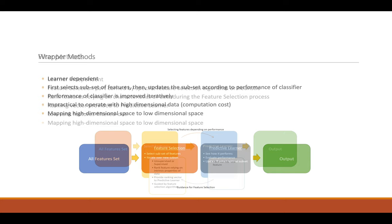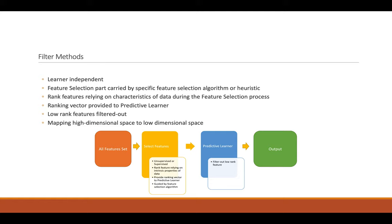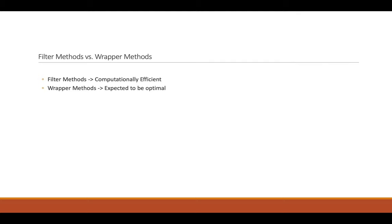Filter Methods are learner-independent. Feature selection are carried by a specific feature selection algorithm or heuristic. Ranked features rely on characteristics of the data during the feature selection process, but Filter Methods can only use for labeled data. Filter Methods are computationally efficient. On the other hand, Wrapper Methods expect it to be optimal.